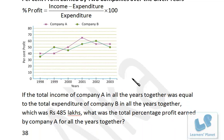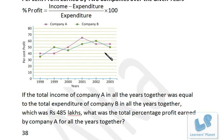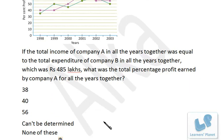Next question: if the total income of company A in all years together equals the total expenditure of company B in all years (which is Rs. 485 lakh), what was the total percentage profit of company A for all years? We cannot calculate this because while total income is given, individual year profits are given — but we need individual year expenditures too. So this cannot be determined.